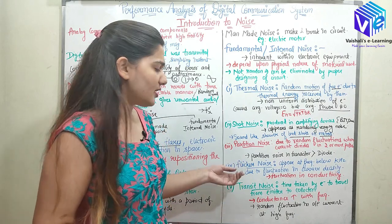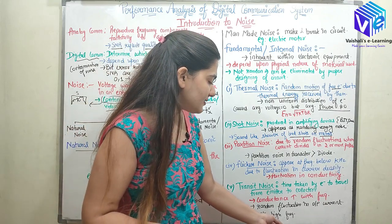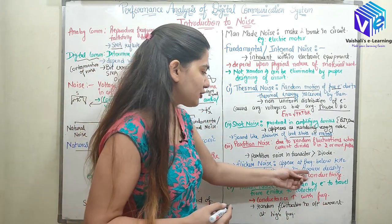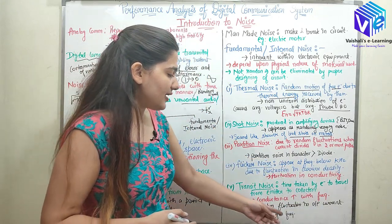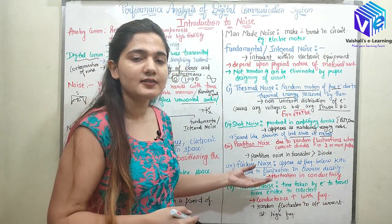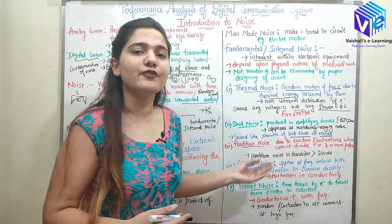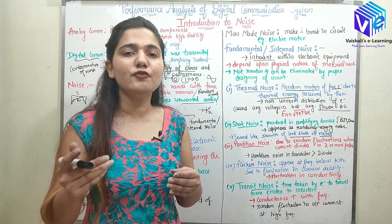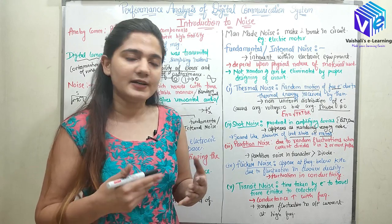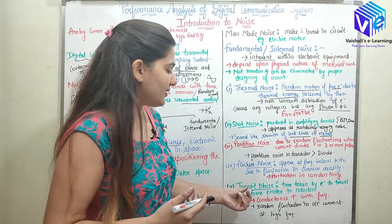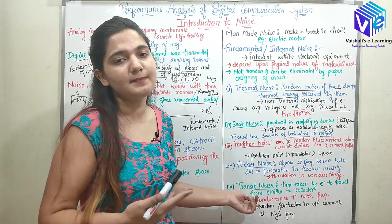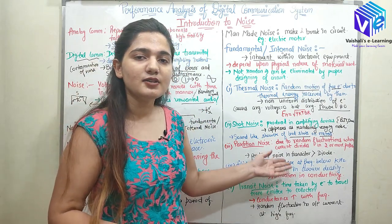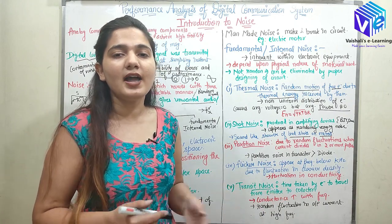Transit noise is the opposite of flicker noise — it occurs at very high frequencies. It is caused by random fluctuations in the output current and is measured using the time taken by the electron to move from the emitter to the collector. In ideal conditions this transit time is taken as zero, but generally it is not. Transit noise depends upon this transit time, and conductance increases with frequency at high frequencies.